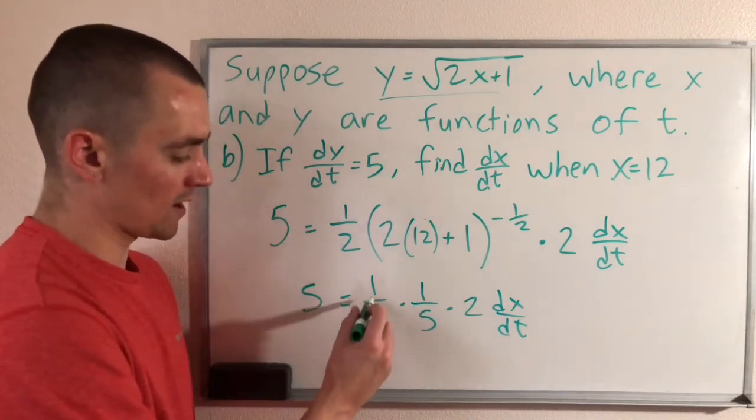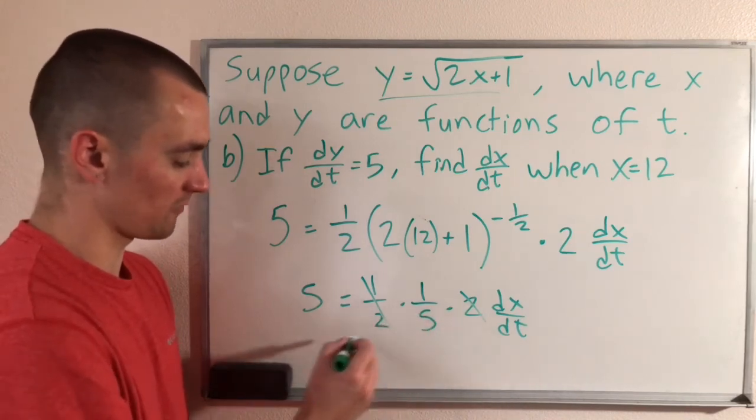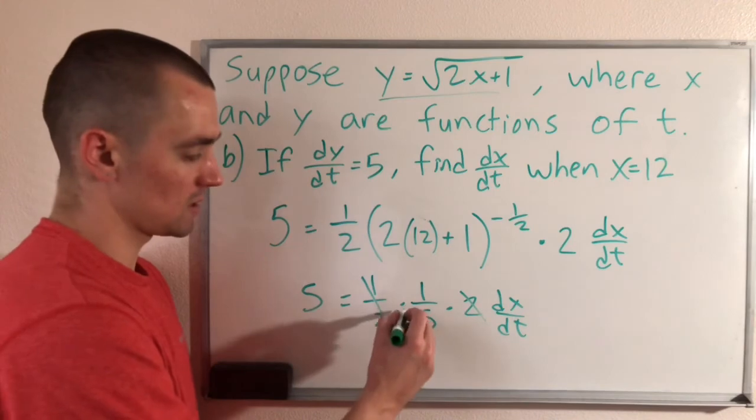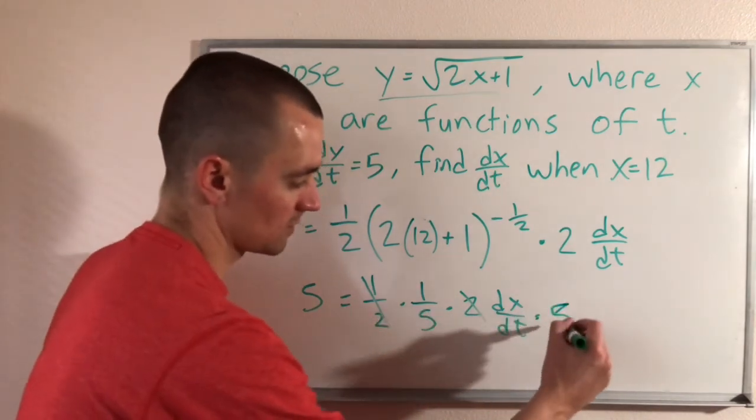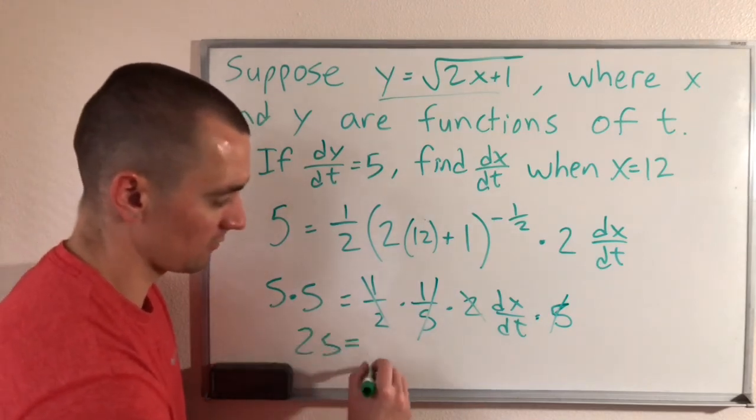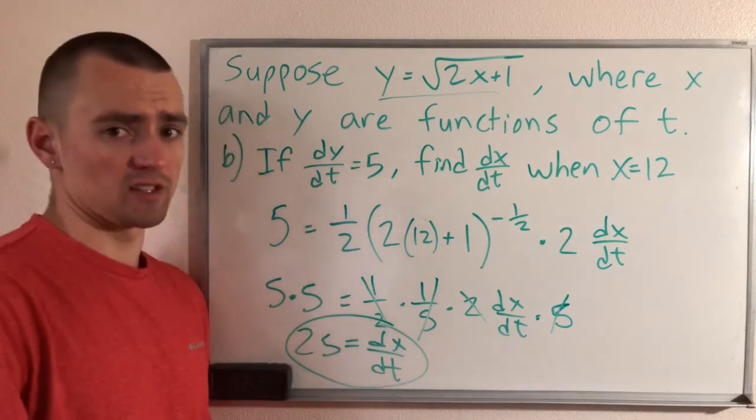So 1/2 times 2, these are going to cancel out. We can multiply both sides by 5 to move this 1/5 over to the other side. So multiply by 5 is going to cancel with the 1/5. Multiply by 5 is going to give us 25 equals dx/dt. And that's all there is to it.